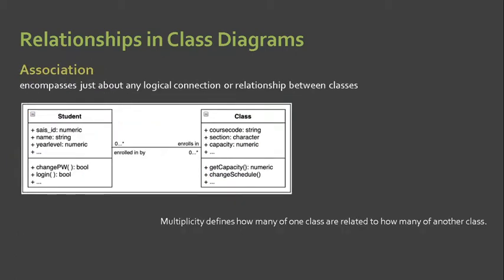We also have the association relationship. When we say association, it encompasses just about any logical connection or relationship between classes. This is similar to the relationships in our ER or entity-relationship diagram, but referred to differently. Association is represented by a bi-directional line, indicating multiplicity or cardinality.